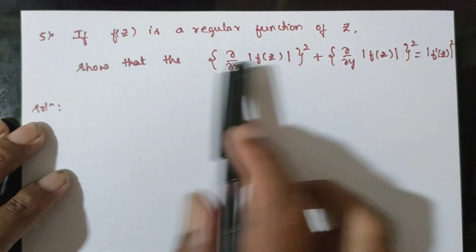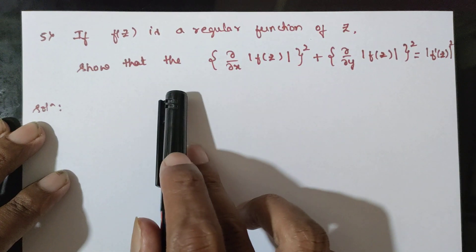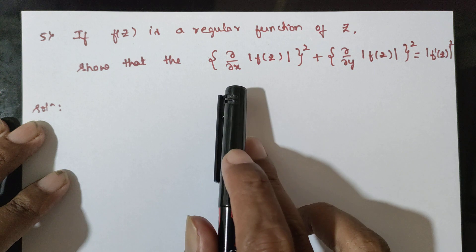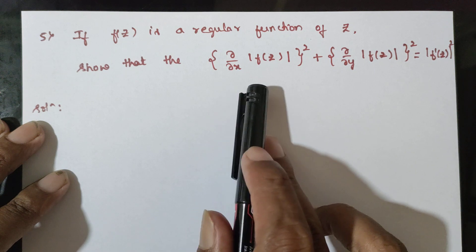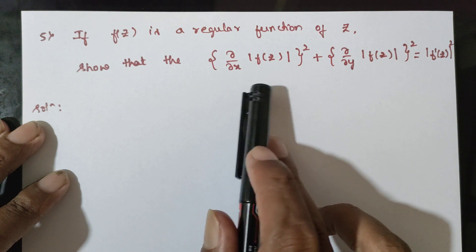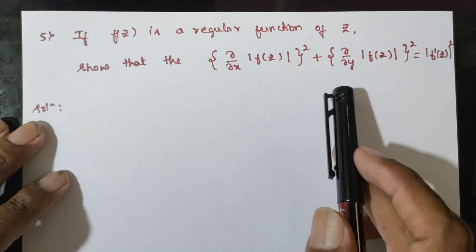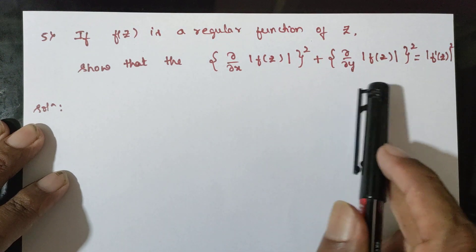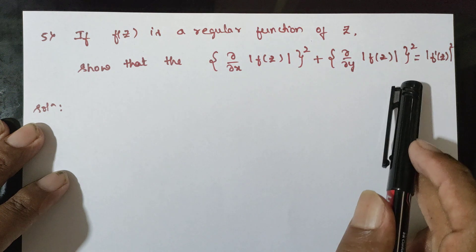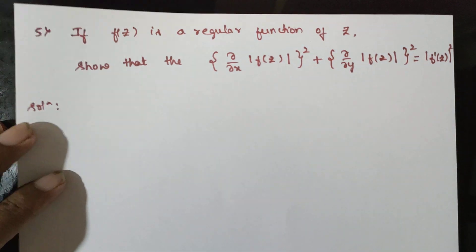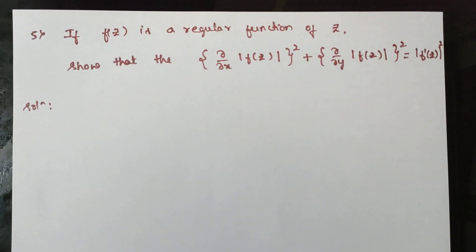If f of z is a regular function of z, show that the partial derivative with respect to x of |f(z)|² plus the partial derivative with respect to y of |f(z)|² is equal to |f'(z)|².